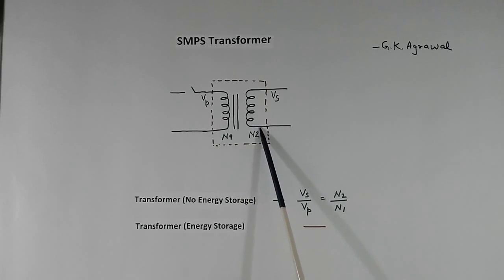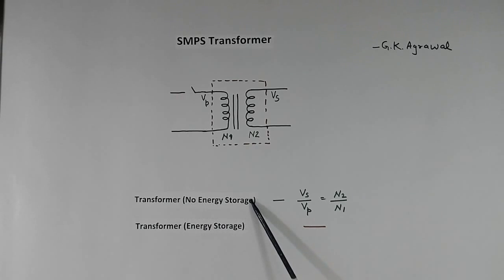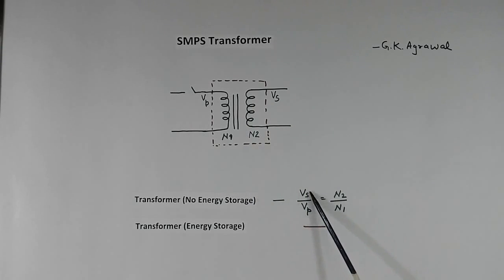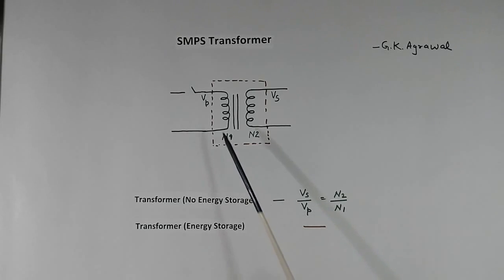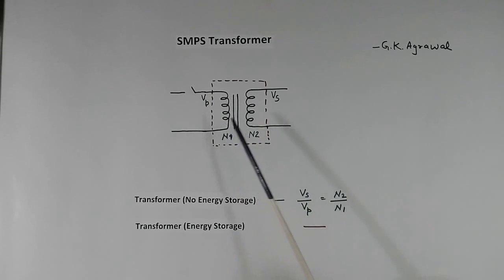This transformer can be operated in two ways depending upon the circuit diagram. First is no energy storage — in this case it operates like a normal transformer. Power transfer takes place without storing energy, and secondary voltage by primary voltage equals secondary turns by primary turns. Second is energy storage — in this case power is not transferred immediately; we store the energy first and then transfer power.